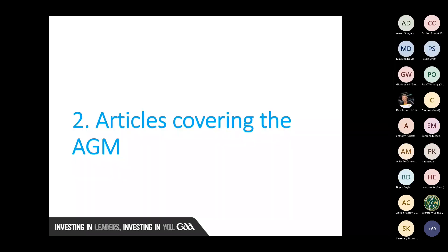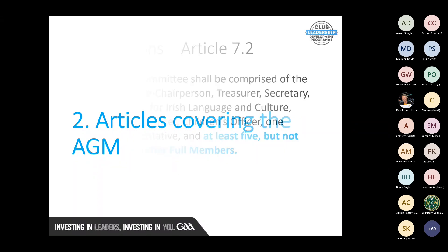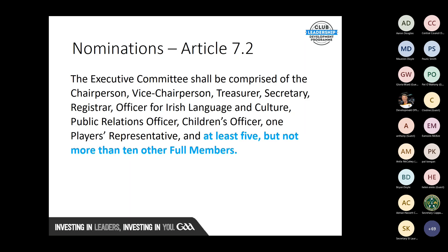Moving on to articles covering the AGM — specifically nominations. Article 7.2 deals with nominations. The executive committee should be comprised of: chairperson, vice chairperson, treasurer, secretary, registrar, officer of the Irish language and culture, public relations officer, children's officer, and one player's representative.